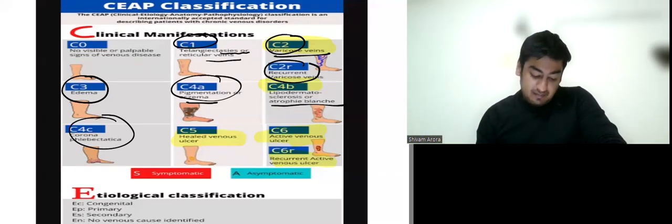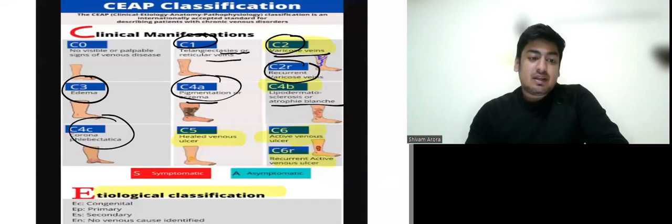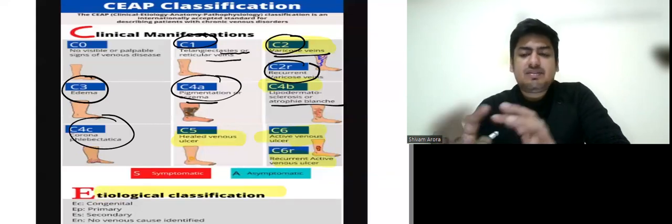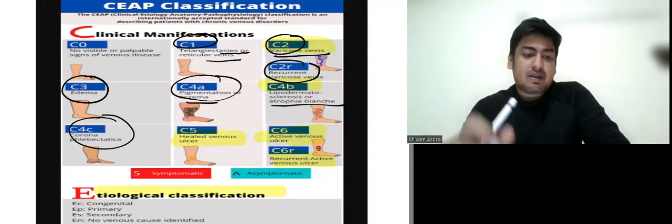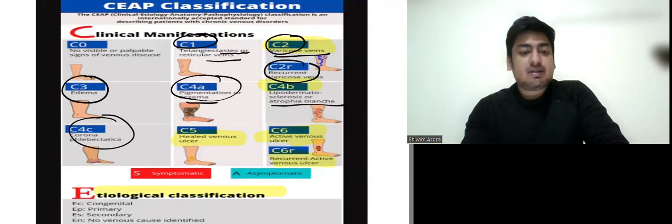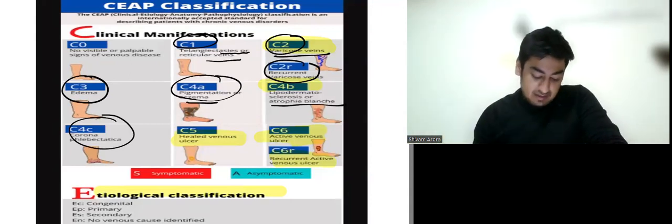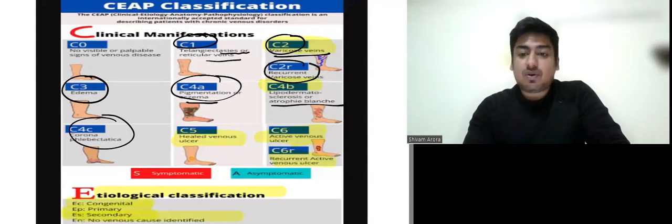Now, for E, we have etiological classification. EC means congenital. It is very simple. So the letter, the sub-letter here signifies what they are suggesting. So EC is congenital, EP is primary, ES is secondary and EN means no venous cause identified.